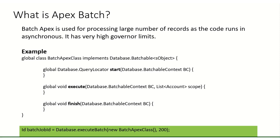To create a batch, you must implement database.Batchable, which requires three methods: start, execute, and finish. In the start method, you put your query to pull the records. In the execute method, you perform all the operations on those records. The finish method is for post-processing — for example, sending an email notification after everything is done.